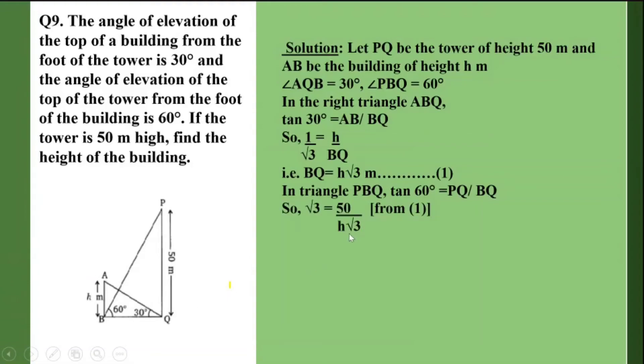BQ was h into root 3 from the first equation. So I get h root 3 into root 3 equals 50. So I get 3h equals 50 and hence h comes out to be 50 by 3 meters.